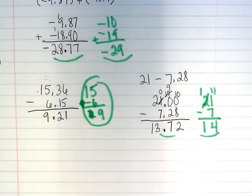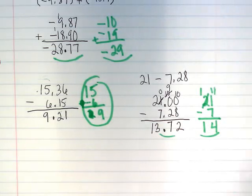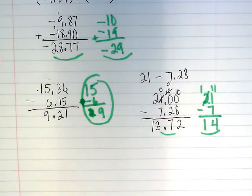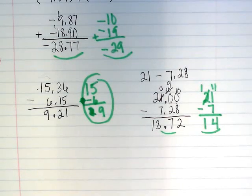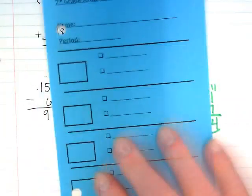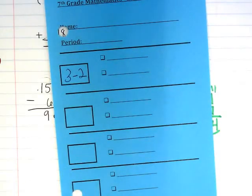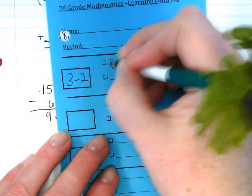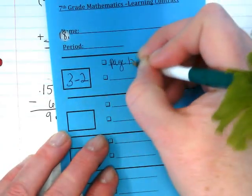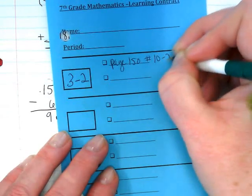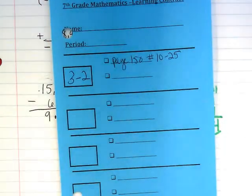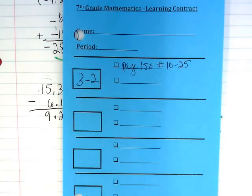I'm going to give you guys a new contract. When you get it, here's what you're going to write on it: three dash two, page one hundred and fifty, numbers ten through twenty-five. We can check that work when we're back in class again tomorrow.